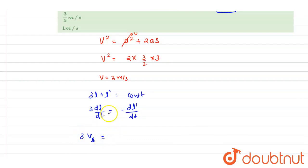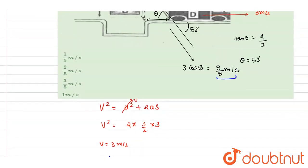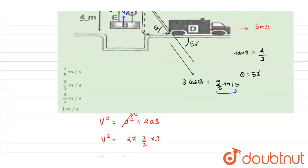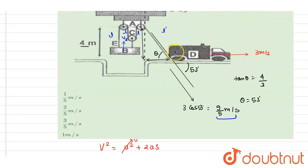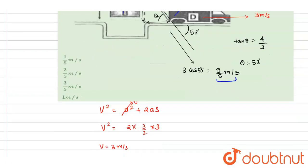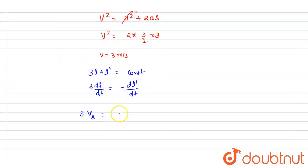So I will write down the rate with which the block B is moving has equal magnitude to that of the component of the truck velocity. So why I took component? Because this perpendicular component will not change the string length. We know the concept of circular motion. So it will be this.